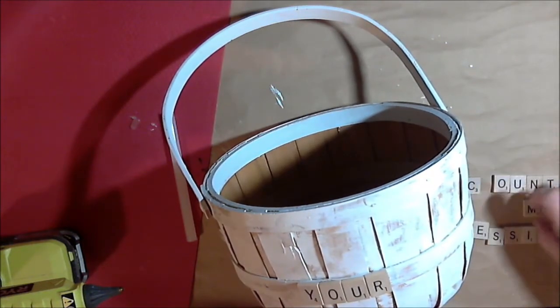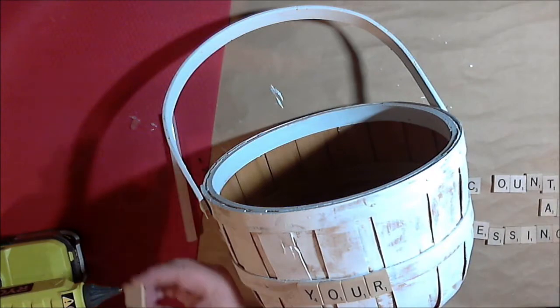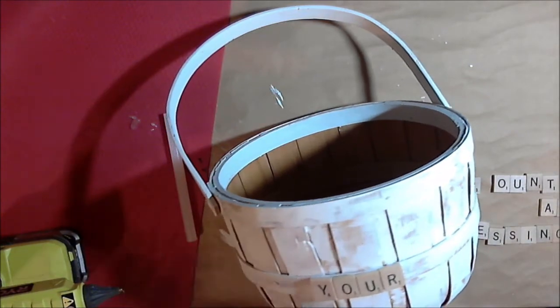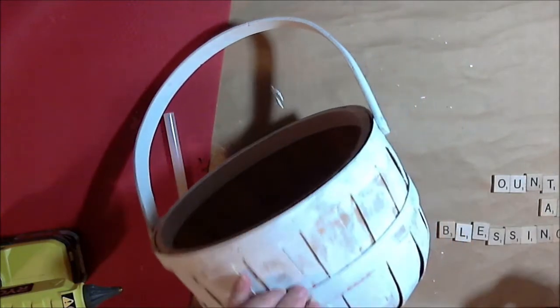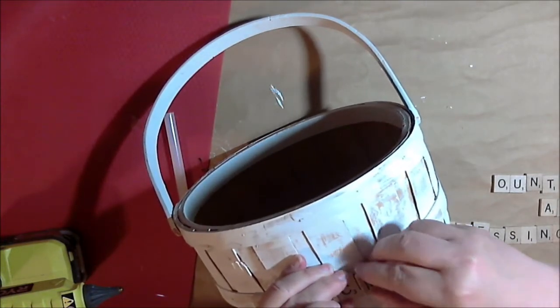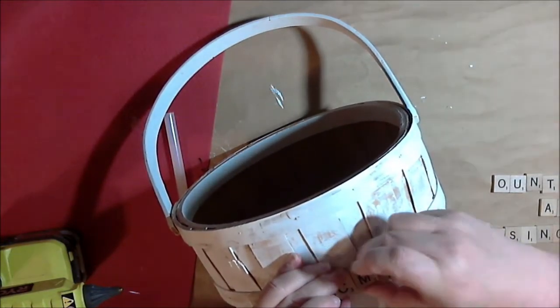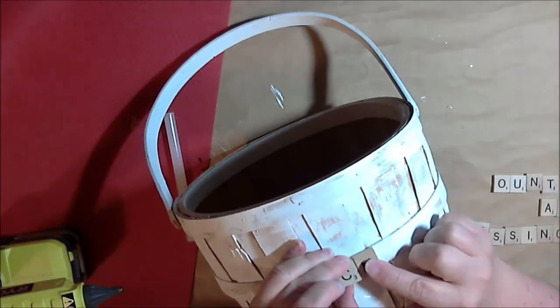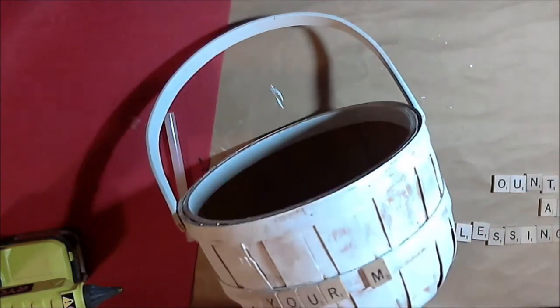So I'm going to put the glue on the M and I'm just going to grab another letter to use as a spacer because I want my letters to line up. So I'm using the C as a spacer and then I'm pulling it out.